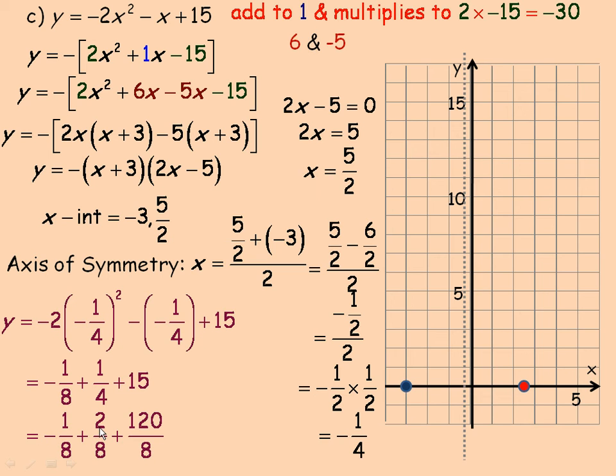Now, negative 1 plus 2 is 1, so this is 1 8th then, plus 120 over 8 gives us 121 over 8.